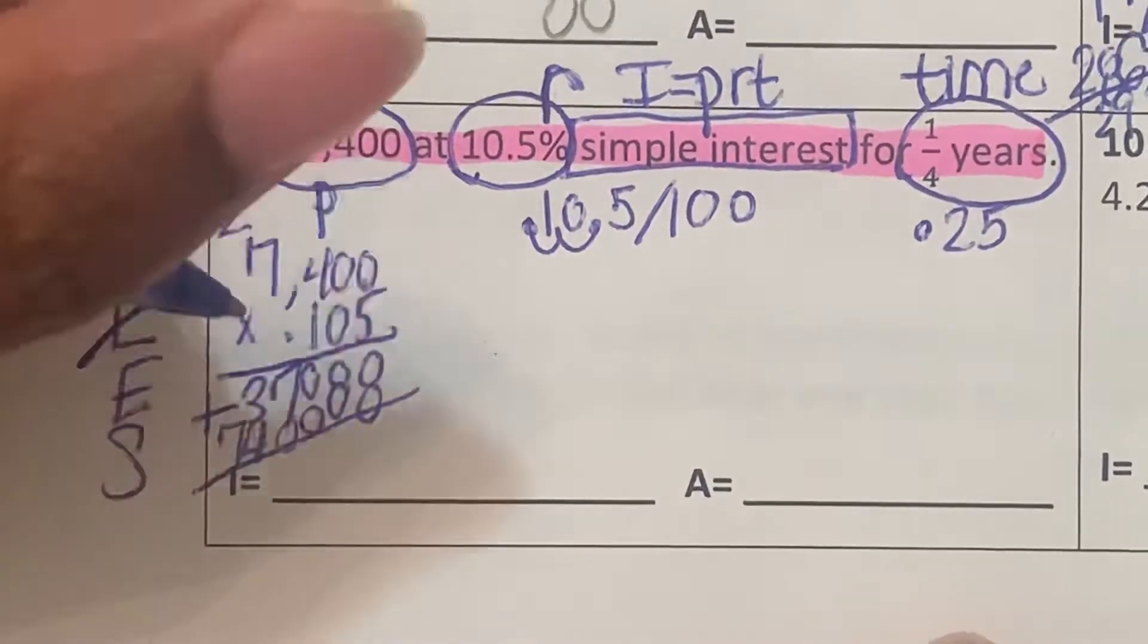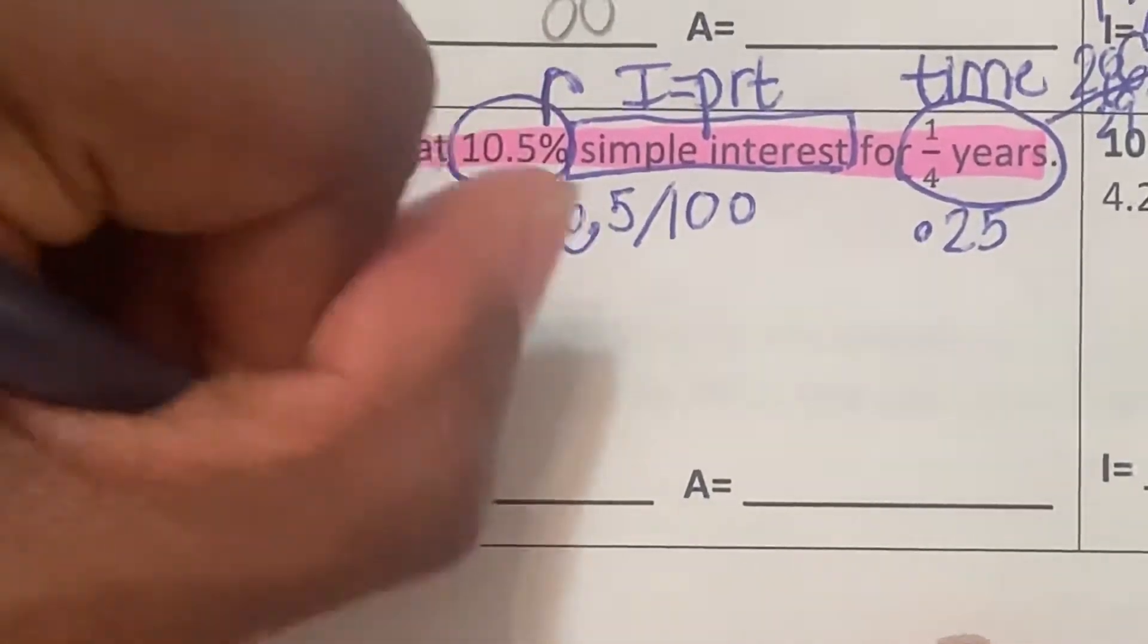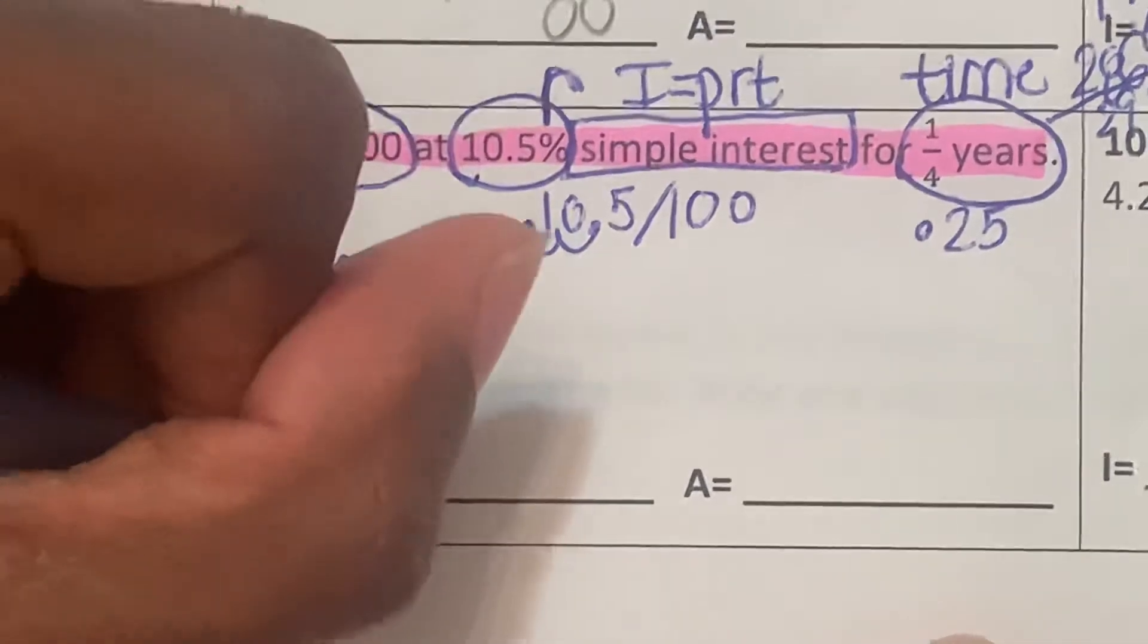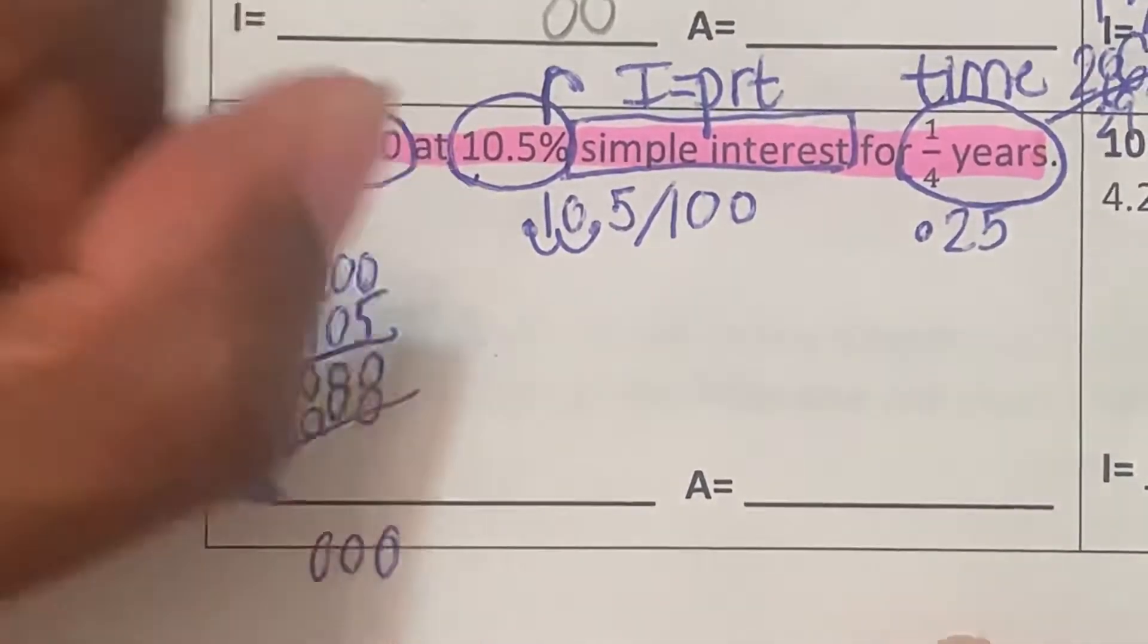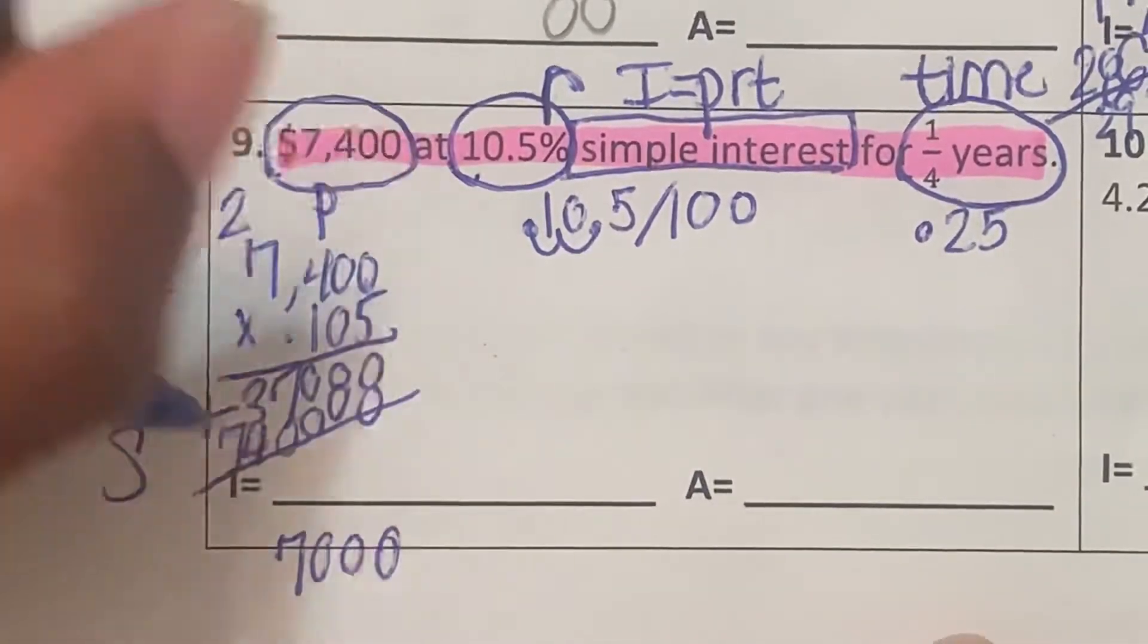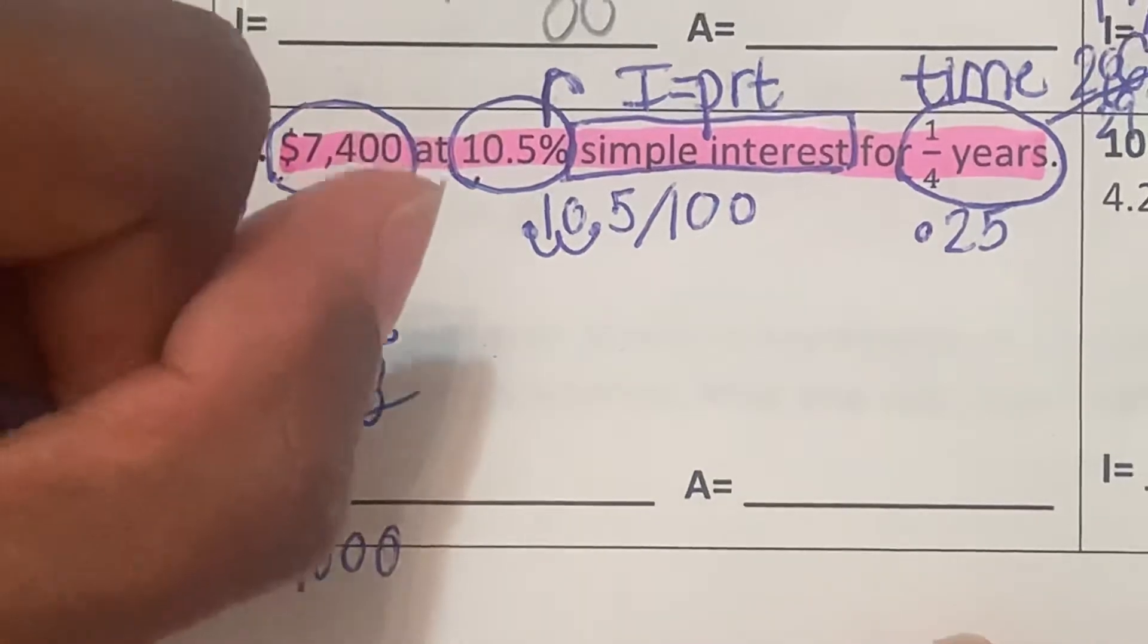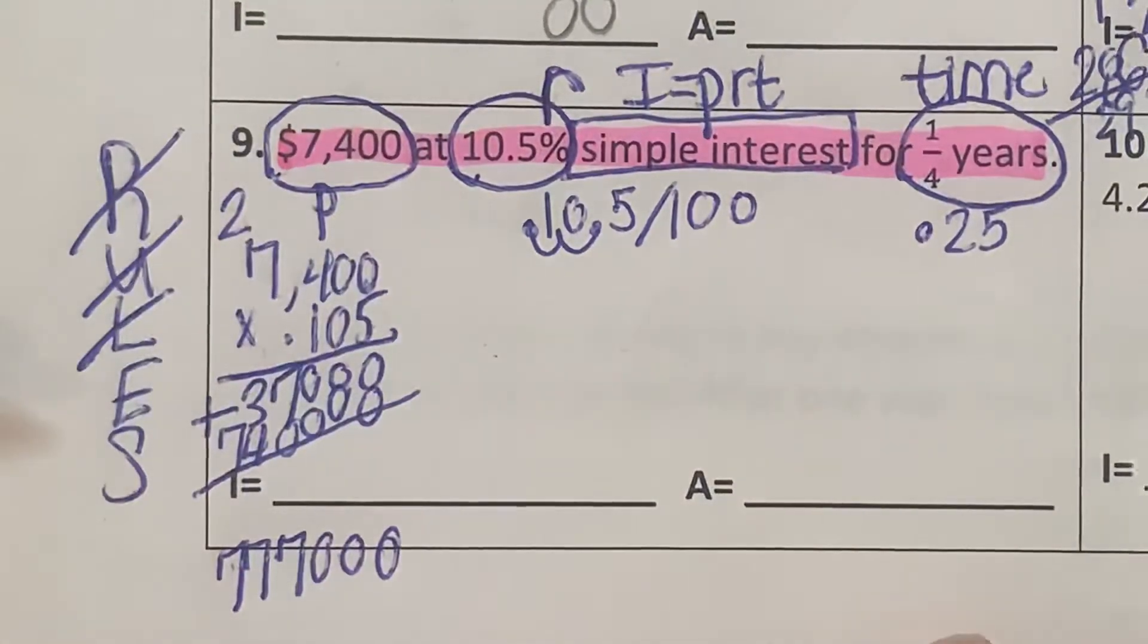Now let's add these numbers up. Zero plus zero is going to be zero. Zero plus zero is going to be zero again. Zero plus zero is going to be another zero. Seven plus zero is seven. Three plus four is going to be seven. And then seven plus nothing is going to be seven.